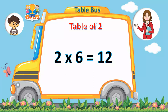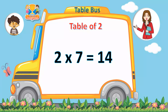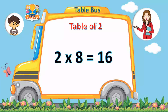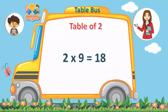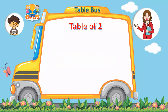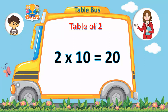Two sixes are twelve. Two sevens are fourteen. Two eights are sixteen. Two nines are eighteen. Two tens are twenty.